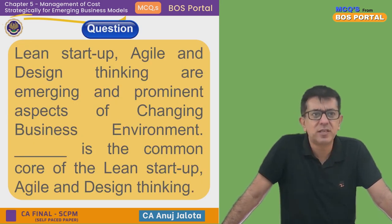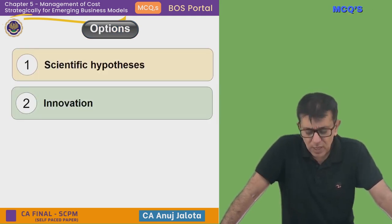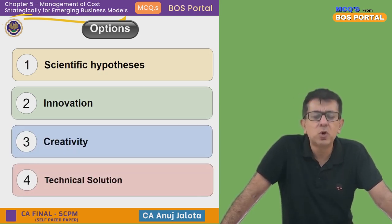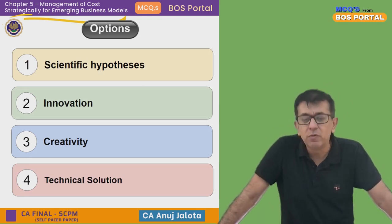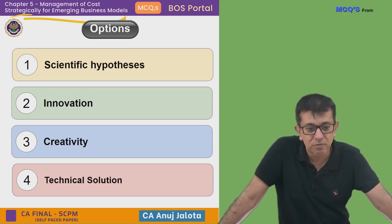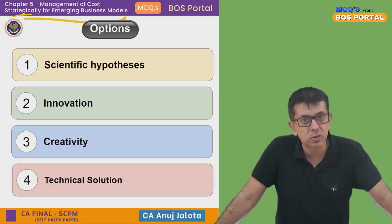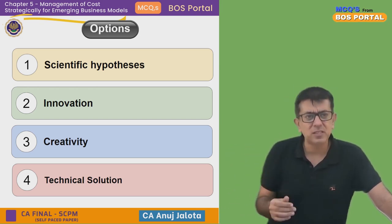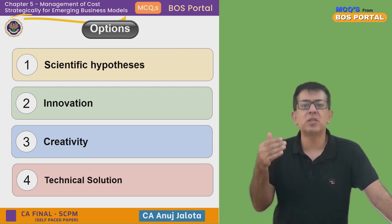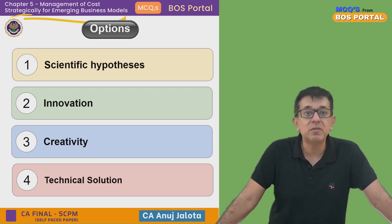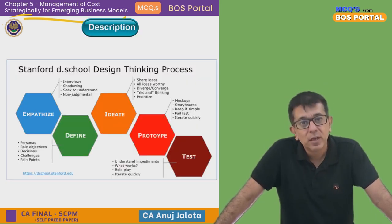What is common between lean startups, agile, and design thinking is nothing but innovation. If you're a startup launching the same thing others have already launched, why would people buy your product? There has to be something innovative. Innovation might not always mean a new product — it could be pricing innovation too.